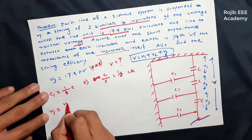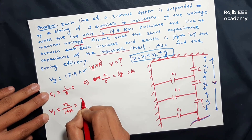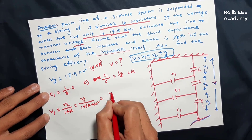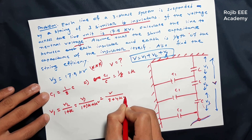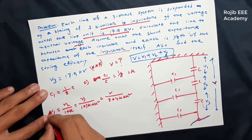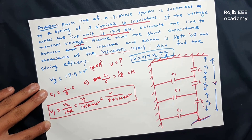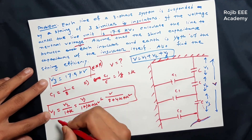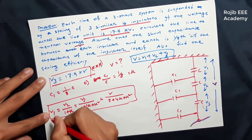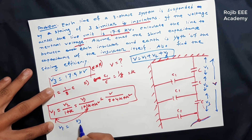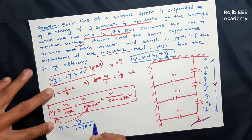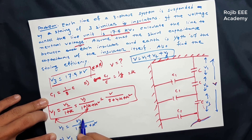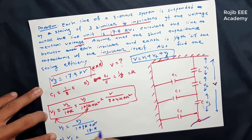V1 is equal to V2 divided by (1 + K), which equals V3 divided by (1 + 3K + K²), which equals V divided by (3 + 4K + K²). So, V1 equals V3 divided by (1 + 3K + K²).